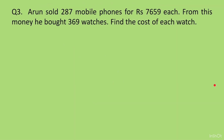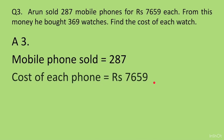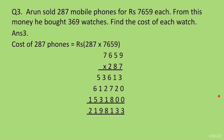Question 3. Arun sold 287 mobile phones for Rs. 7659 each. From this money he bought 369 watches. Find the cost of each watch. We write: mobile phones sold is equal to 287; cost of each phone is equal to Rs. 7659. Now we find the cost of 287 phones by multiplying 287 and 7659. When you multiply, you get 2198133.